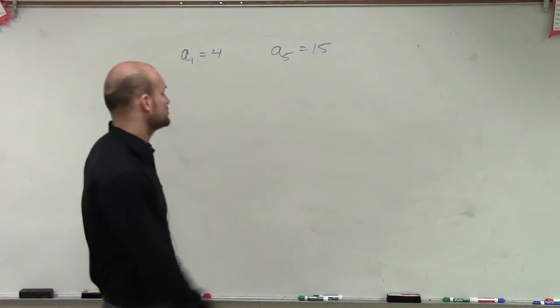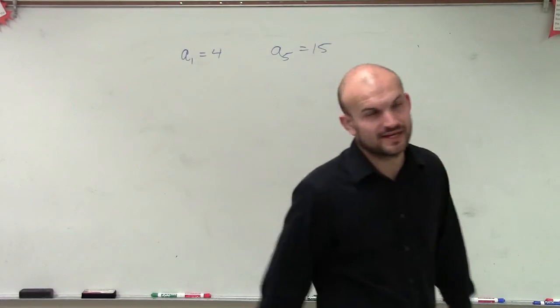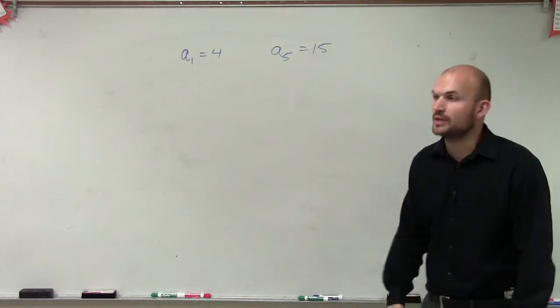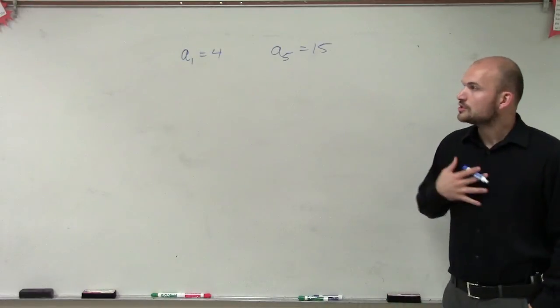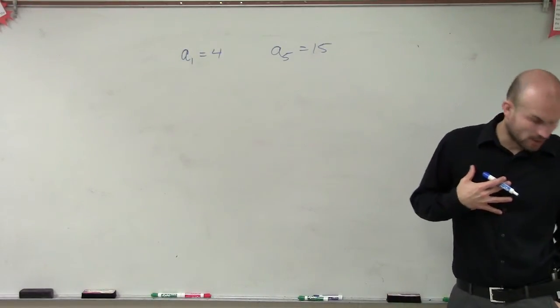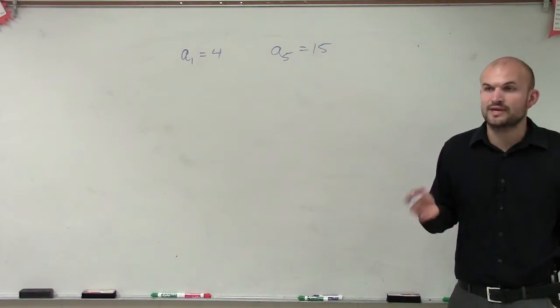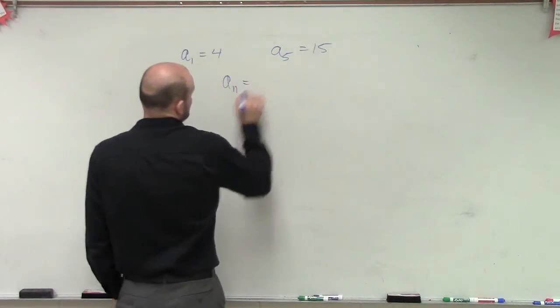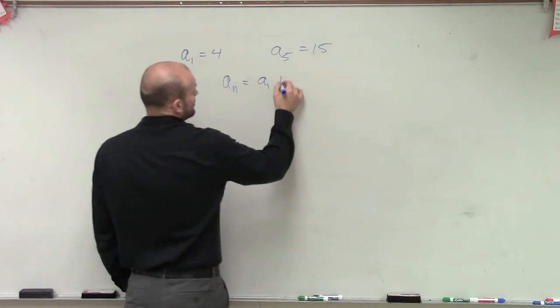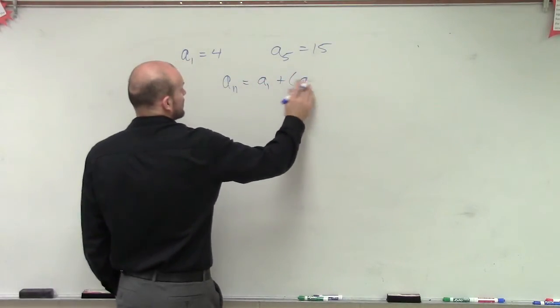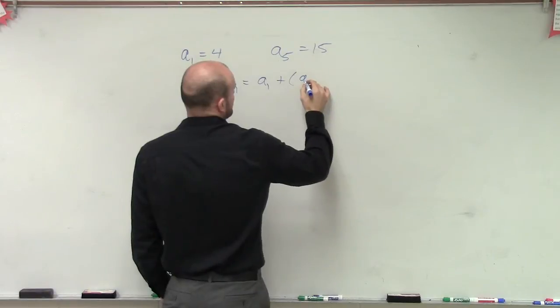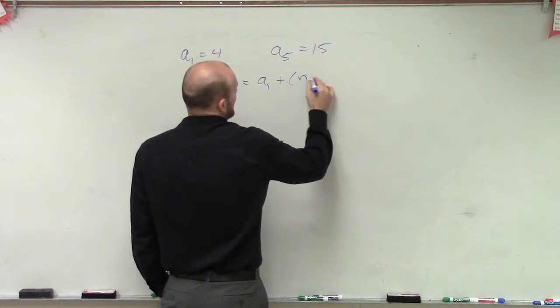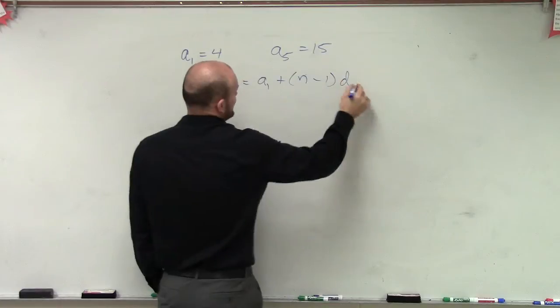So ladies and gentlemen, we have a sub 1 equals 4 and a sub 5 equals 15. So to be able to find the formula for this problem, we're going to have to use our formula for the nth term of arithmetic sequence, which is going to be a sub n equals a sub 1 plus n minus 1 times d.